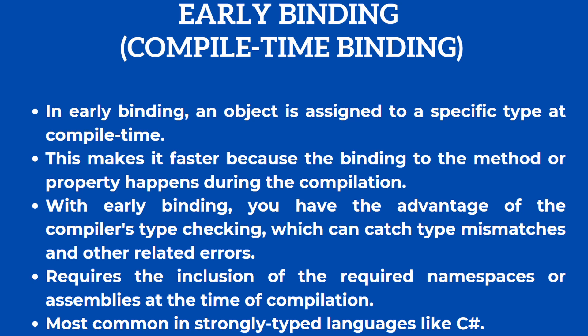In early binding, an object is assigned to a specific type at compile time. This makes it faster since the binding to the method or property happens during compilation. With early binding you have the advantage of the compiler's type checking, which can catch type mismatches and other related errors.